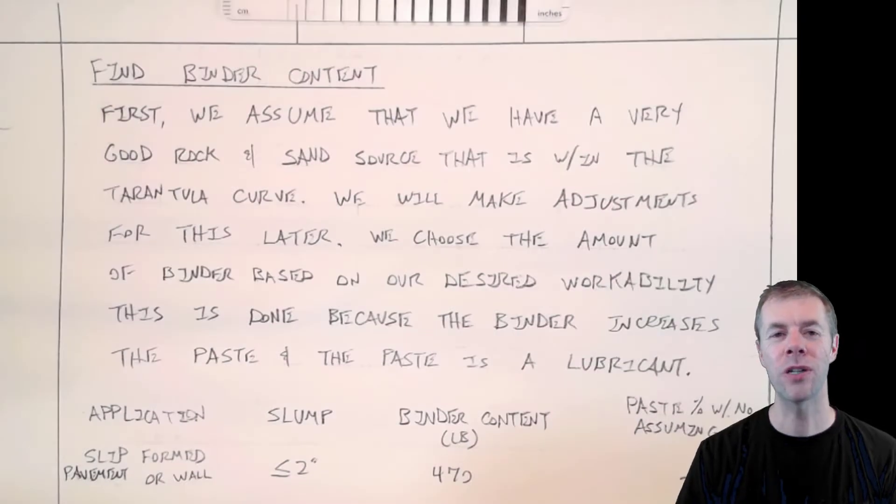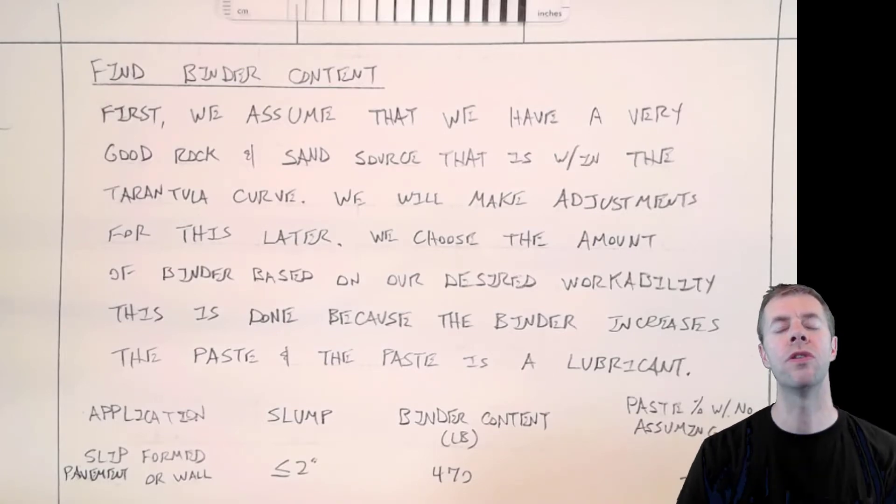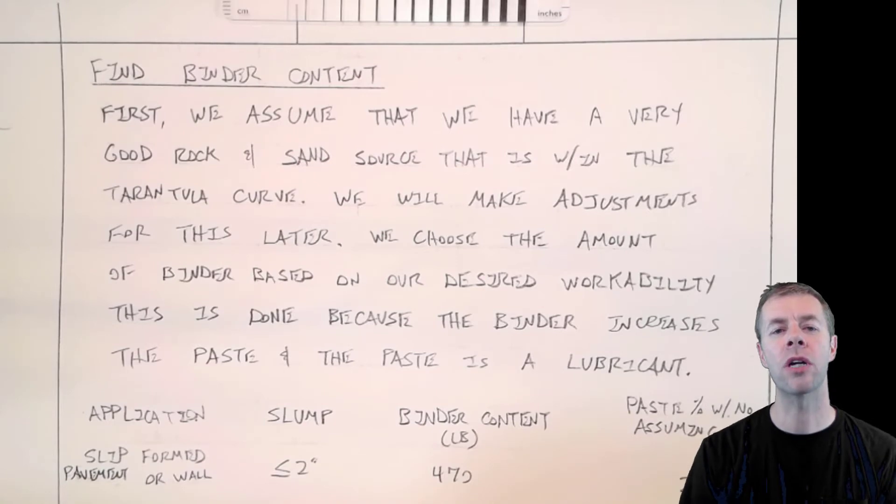The first step in the Tarantula Curve mixture design is to find the binder content. And we're going to assume that we have a very good rock and sand source that's within the Tarantula Curve, and we're going to make adjustments for this later if you're not. We're going to choose the amount of binder based on the desired workability that you want to have with your concrete. This is done because the binder is really a big input into your paste, and your paste is actually going to act as a lubricant between the aggregates to help them move and slide to get whatever workability you're interested in.